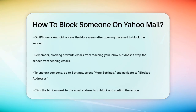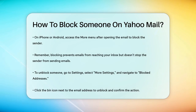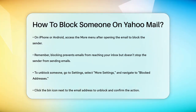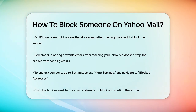Remember, blocking an email address on Yahoo Mail prevents future emails from that sender from reaching your inbox, but it doesn't delete the sender's ability to send emails — it just ensures you won't receive them. To unblock someone, go to the Settings icon, select More Settings, then navigate to Security & Privacy and find the Blocked Addresses section. Identify the sender you want to unblock, click the bin icon next to their email address, and confirm the unblocking action.